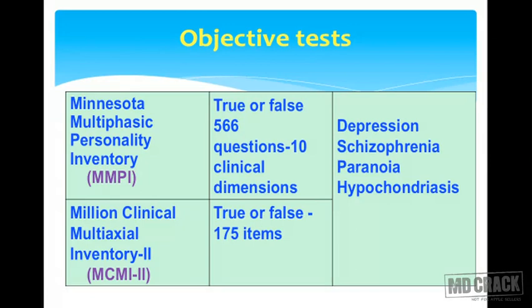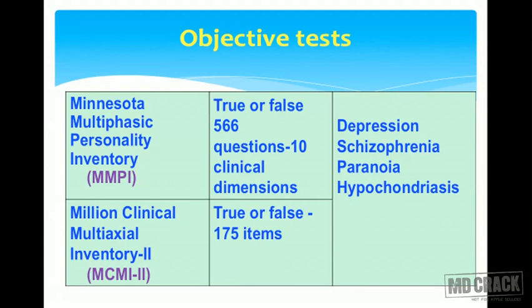The Minnesota Multiphasic Personality Inventory, MMPI, has 566 true-or-false questions testing 10 clinical dimensions. The Millon Clinical Multiaxial Inventory 2, MCMI-2, has 175 true-or-false items also testing various clinical dimensions. These two objective tests are useful in the diagnosis of depression, schizophrenia, paranoia, and hypochondriasis.